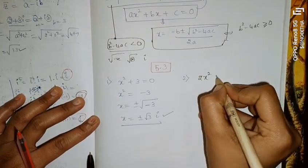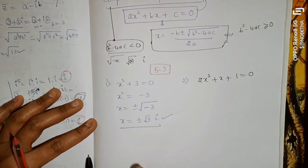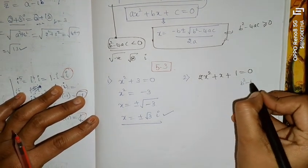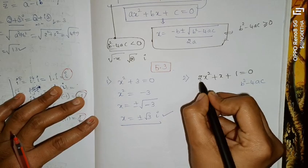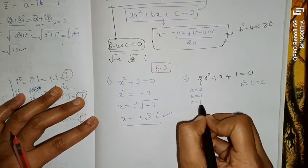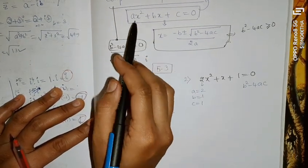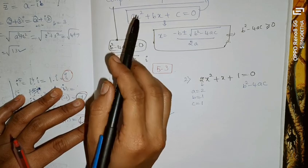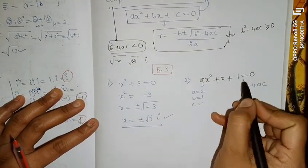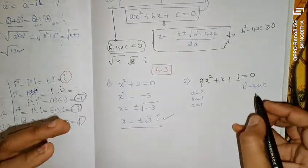Second question: 2x² + x + 1 = 0. First find b² − 4ac. Comparing with ax² + bx + c = 0, we get a = 2, b = 1, c = 1.